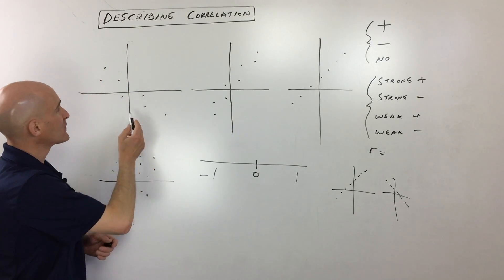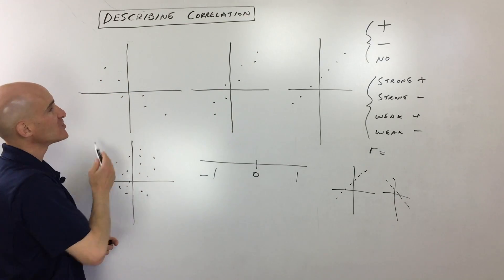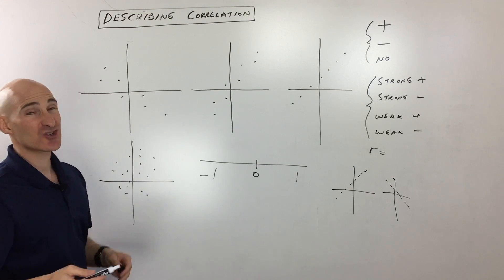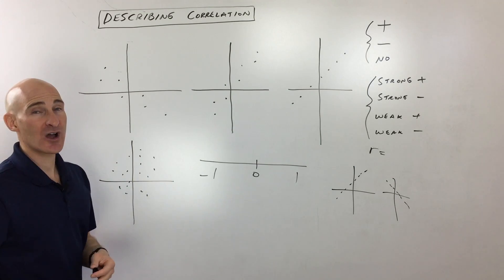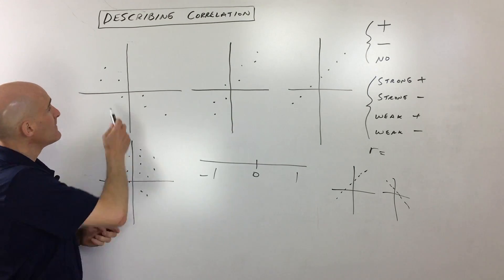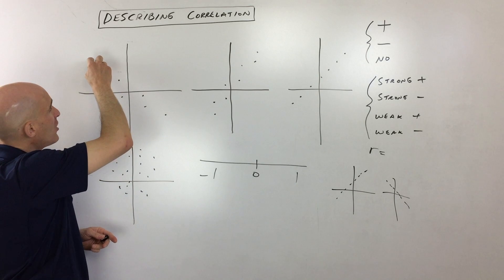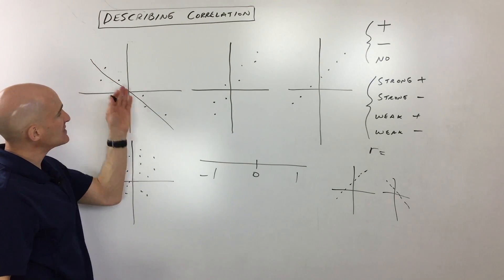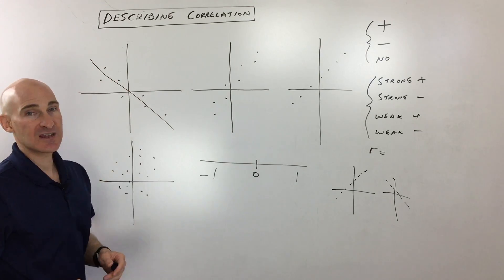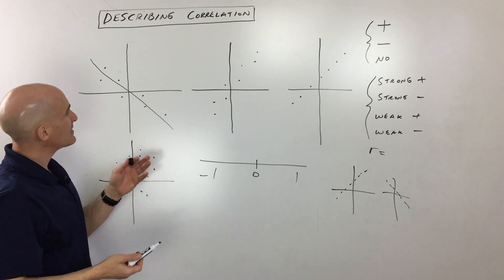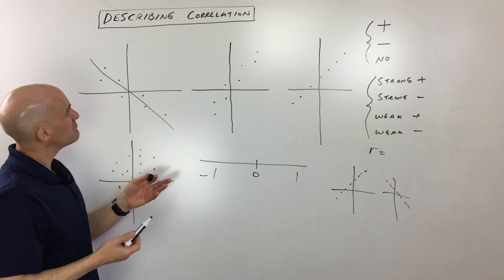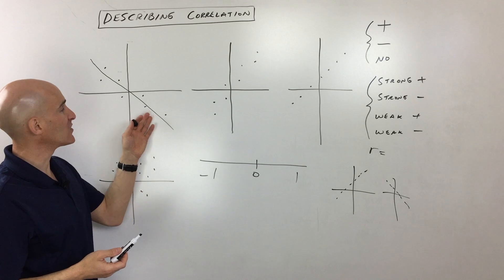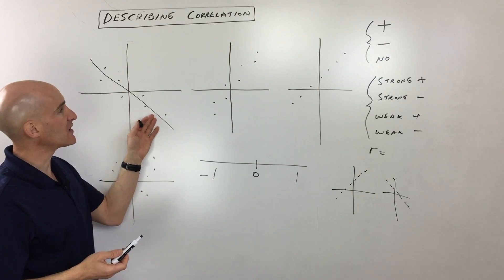Let's take a look at these examples. This first one — is it positive or negative? Strong or weak? Well, if I draw a line of best fit, it looks like it's trending down to the right. I would say probably a weak negative correlation. So it's going to have a negative r value, maybe somewhere around negative 0.5 or negative 0.6.